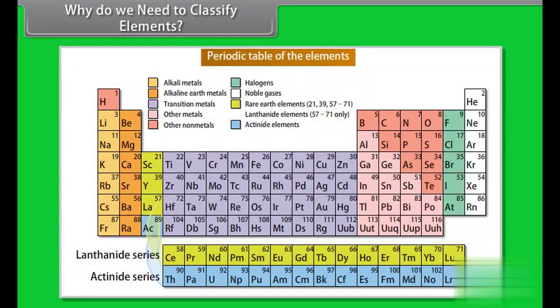The periodic table may be defined as the table giving the arrangement of all the known elements according to their properties, so that similar elements fall within the same vertical column and dissimilar elements are separated. Genesis of periodic classification.